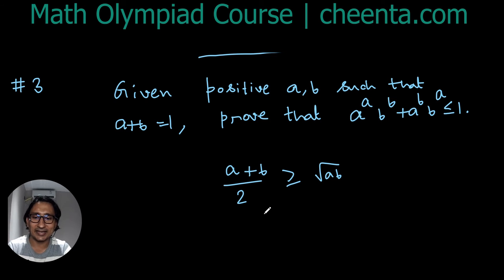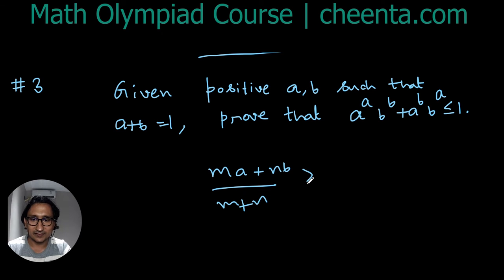What if we had instead of having one a and one b, what if we had some number of a's and some number of b's? Then it would be like (ma + nb)/(m+n) is greater than or equal to the (m+n)th root of a^m b^n.